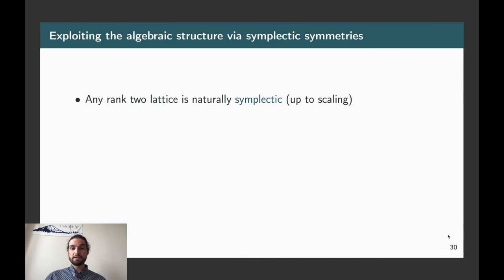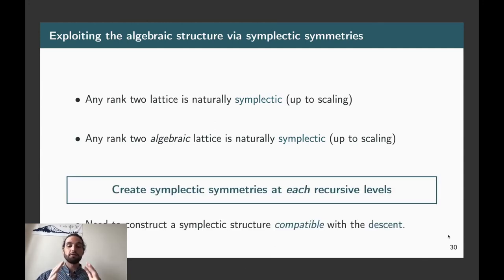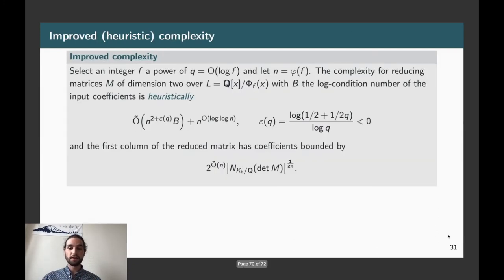The thing is, any rank 2 lattice is naturally symplectic up to scaling. The form you are taking to consider that is just a determinant form. And in particular, any rank 2 algebraic lattice becomes naturally symplectic for a suitable form. What we would like to do then is to create symplectic symmetry at each recursive level of the recursion tree of the algorithm I presented earlier. And this means that we need to construct a full symplectic structure which will be compatible with the descent. And using all of this technique together, basically, you can halve the reduction time at each level of the recursion tree and so gain a polynomial factor on the overall complexity. So heuristically, we can get an improved complexity using this symplectic trick.